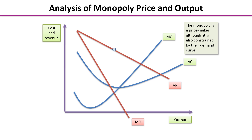The marginal revenue curve is falling at twice the rate and cuts the x-axis — it's just tradition to draw it that way. The average cost curve is a big U shape, with the marginal cost curve in a tick shape, making sure that the tick cuts the average cost curve at its lowest point.